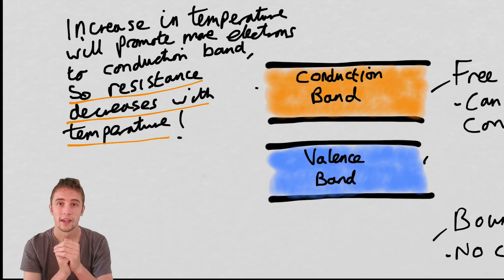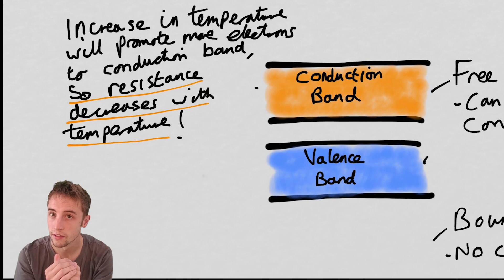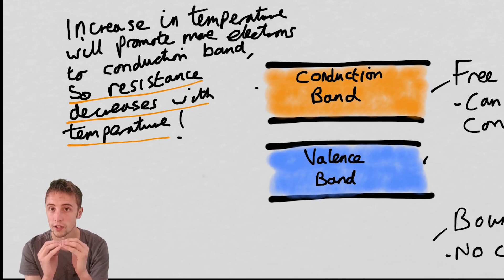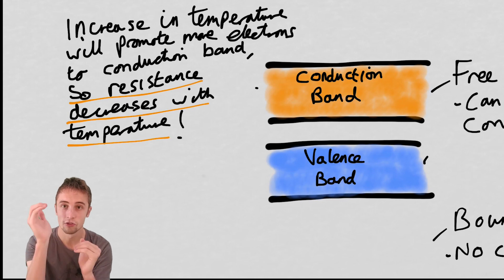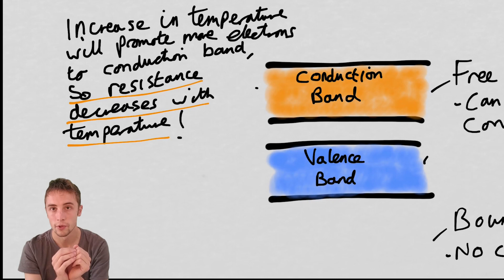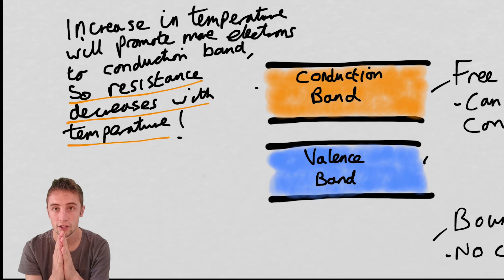If you were to take, say, a thermistor — a thermistor is a semiconductor device where if you increase the temperature, you are giving the electrons in the valence band enough energy to jump up into the conduction band across this very small band gap. This means you can increase the number of available charge carriers just by increasing the temperature of the thermistor.